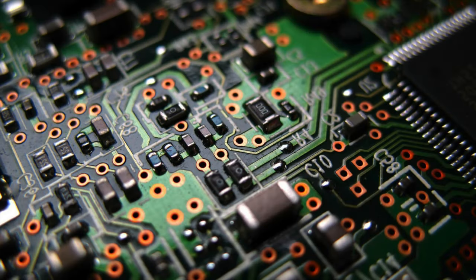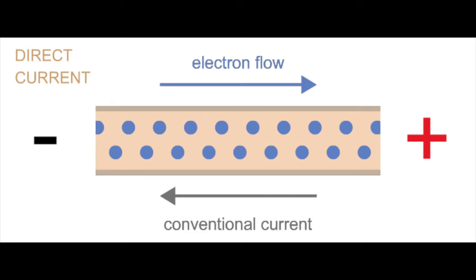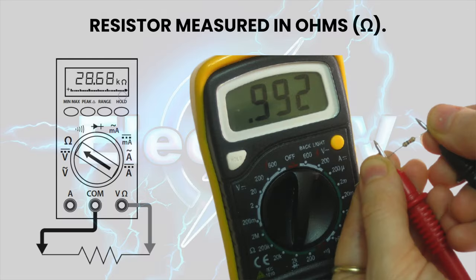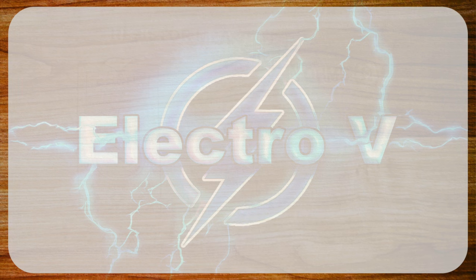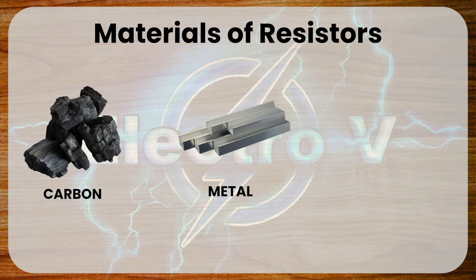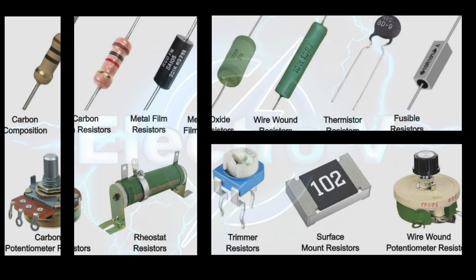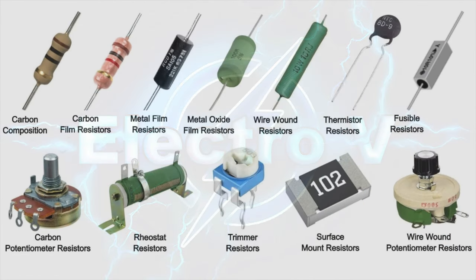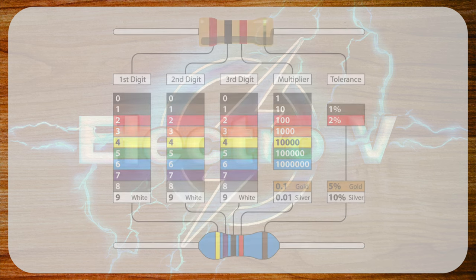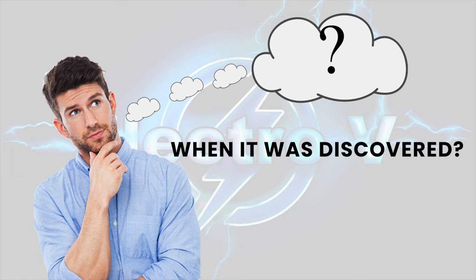First, what is resistors? A resistor is an electrical component that is used to reduce or control the flow of electrical current in an electrical circuit. It works by providing resistance to the flow of electrical current, which is measured in ohms. Resistors can be made from a variety of materials including carbon, metal, and ceramic. They come in different shapes and sizes, and their resistance value is typically indicated by colored bands or printed on the component.